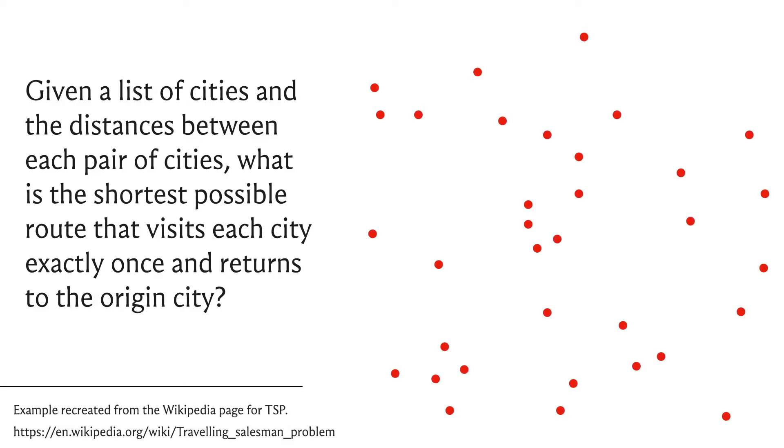This example is a recreation from the Wikipedia page for this problem. Assuming costs between any pair of points are proportional to euclidean distance, the tour being drawn out is the optimal one.